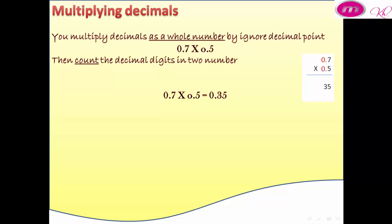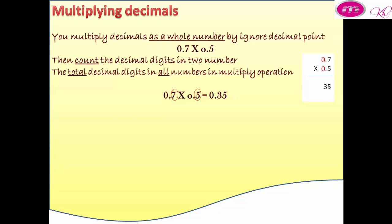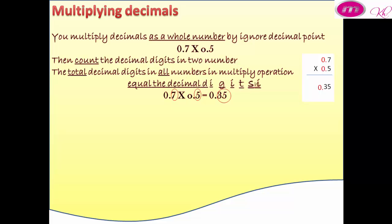In the first number we have one decimal digit; in the second number we have one decimal digit. The total decimal digits in all numbers in the multiply operation equals the decimal digits in the result. The result will be 0.35 — two decimal digits.